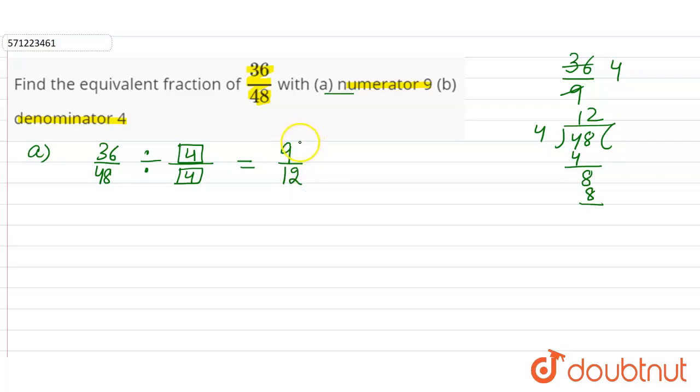So the equivalent fraction of 36 divided by 48 is 9 by 12. Now in the B part, again the fraction is 36 divided by 48.